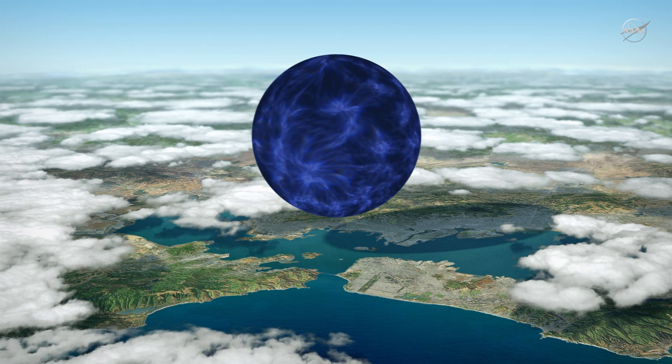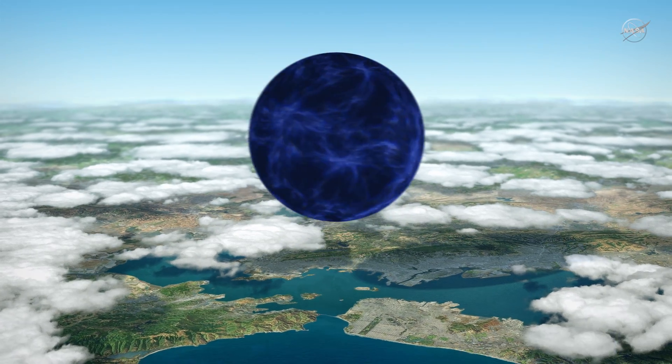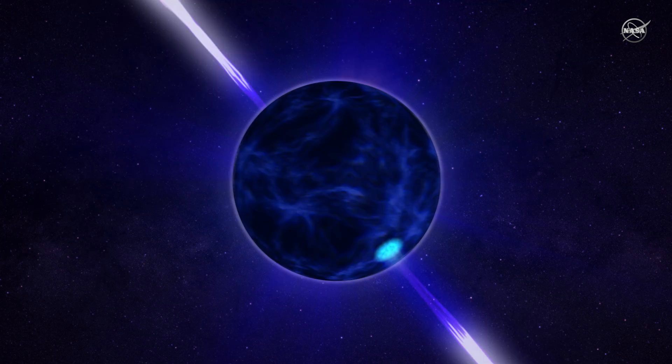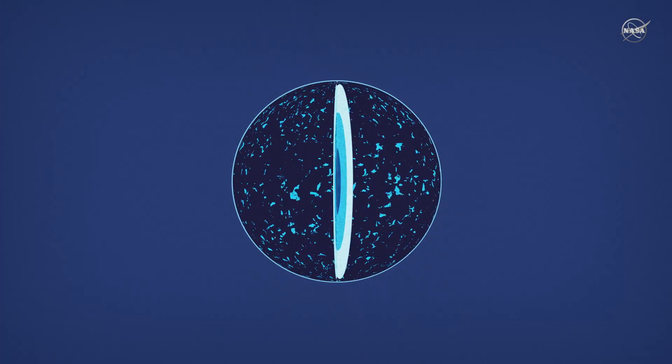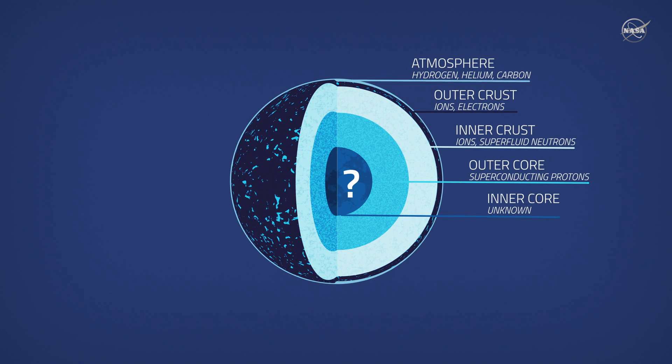Neutron stars compress up to twice the Sun's mass into a city-sized sphere. Matter is packed so tightly that a teaspoon of neutron star interior would weigh more than a billion tons on Earth. Still, the nature of the ultra-dense matter in the cores of neutron stars is unknown.